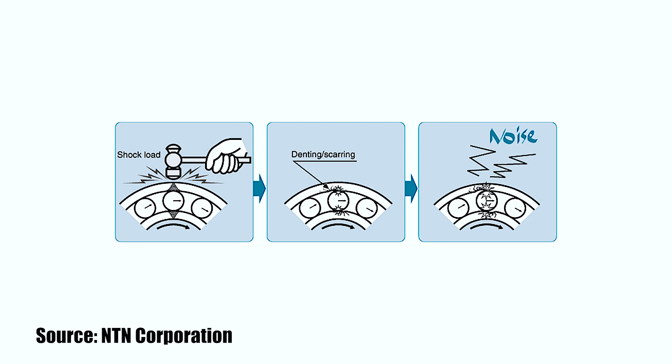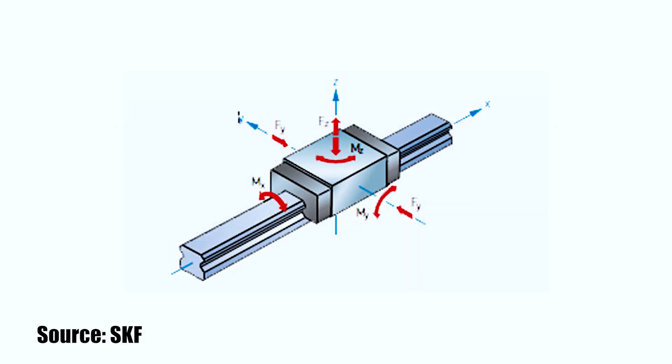Static loading generally occurs when the bearing is stationary but loaded for long periods of time, when the bearing is loaded and moving at very slow speeds, or when the bearing experiences high shock loads. For example, a drilling tool on the end of a linear guide will experience a static load when the guide stops moving and the drill is operating. Similarly, a vertically mounted guide is subjected to a static load when it holds a load at the top of the stroke.